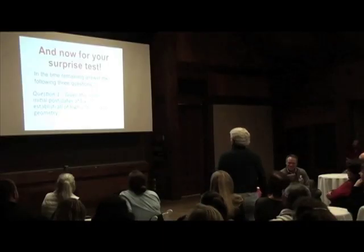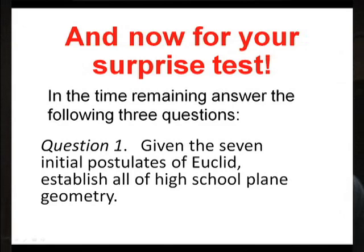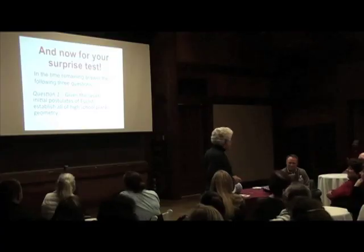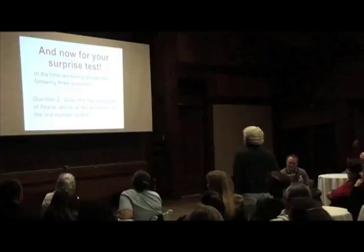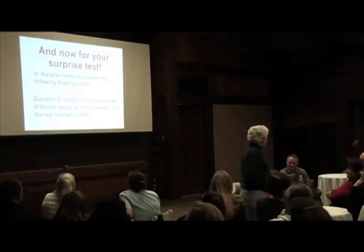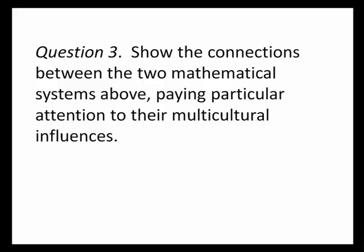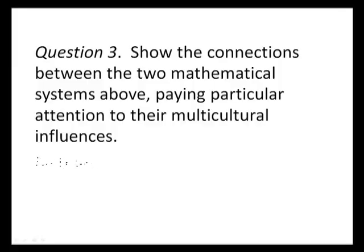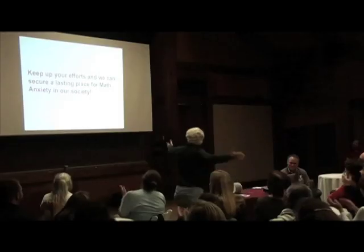And finally, now for your surprise test. Question one: given the seven initial postulates of Euclid, establish all of high school plane geometry. Question number two: given the five postulates of Peano, derive all the properties of the real number system. Question number three: show the connections between the two mathematical systems above, paying particular attention to their multicultural influences. Oh, be brief. Keep up the efforts, and we can secure a lasting peace in our society. Thank you very much.